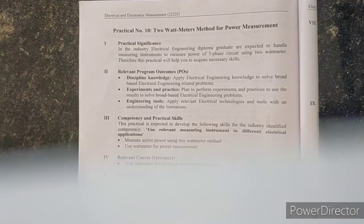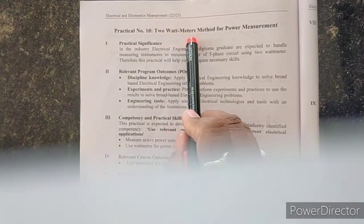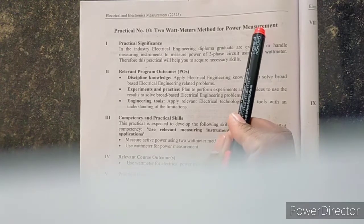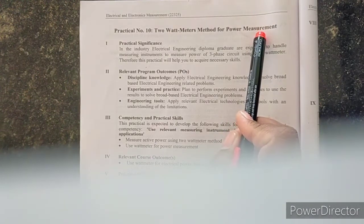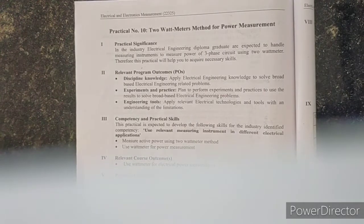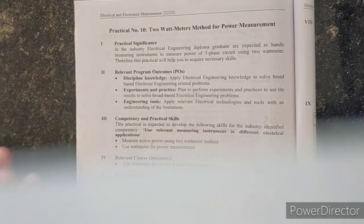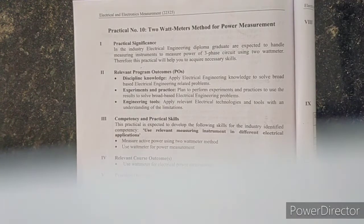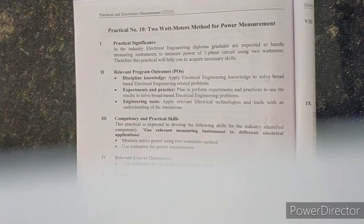Hello students, today we will see practical number 10 from the EEM subject. The aim of the practical is the 2-wattmeter method for power measurement. In this practical we have to measure the active power using the 2-wattmeter method. There are 3 methods for power measurement: 1-wattmeter, 2-wattmeter, and 3-wattmeter. The 2-wattmeter method is suitable for a 3-phase 3-wire system, can be used for star and delta systems, and works for both balanced and unbalanced loads.